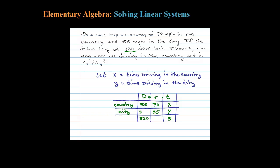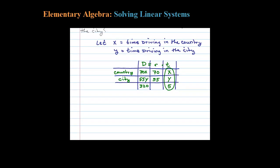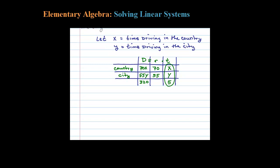Okay, now we can set this up. Firstly, by seeing those times, the time in the country plus the time in the city should equal 5. So that's going to be sort of our first equation, the easy one: X plus Y equals five hours.